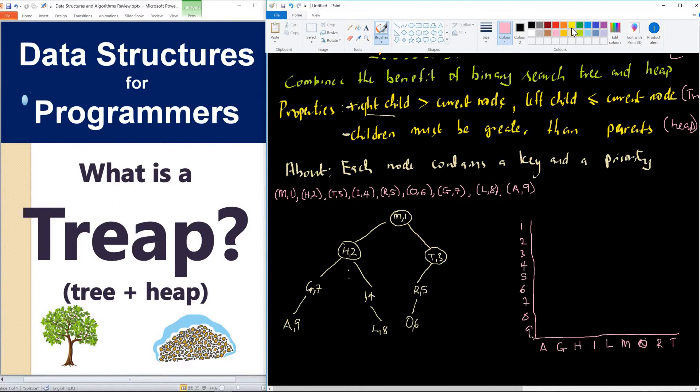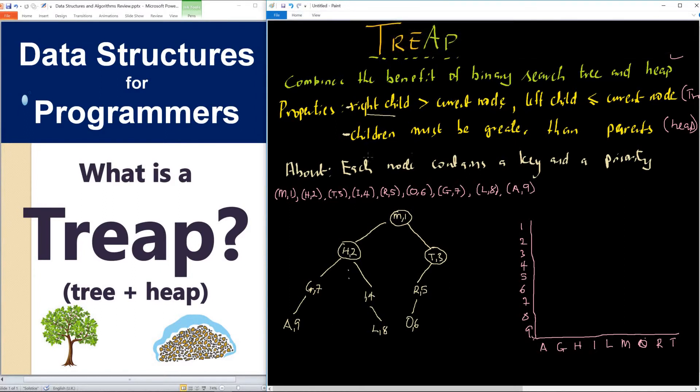Let me take a different color. What to do is now to represent each of the items to be plotted on this graph. Let's start with the first one, M1. We have 1 this way and we have M coming this way. We have M1 at this point. The next one is H2. We have 2 and this is H. This is H2.